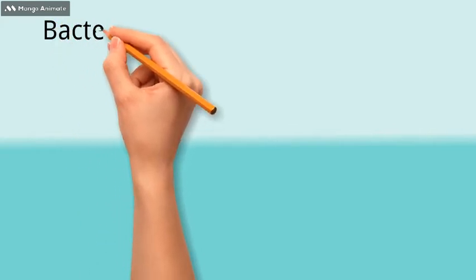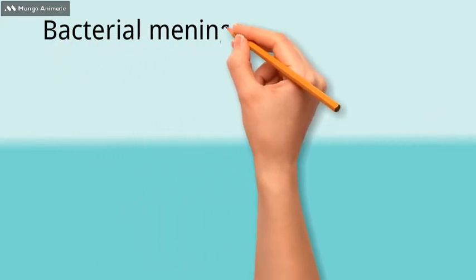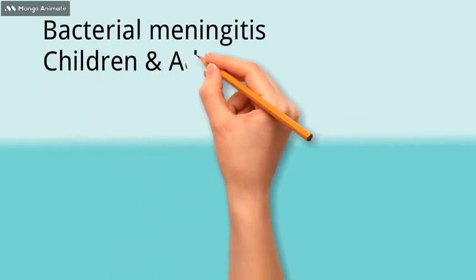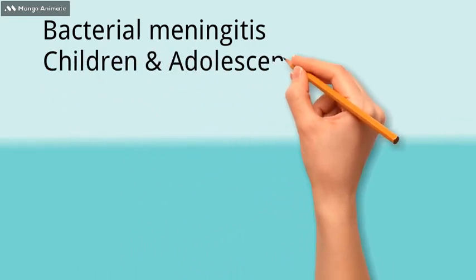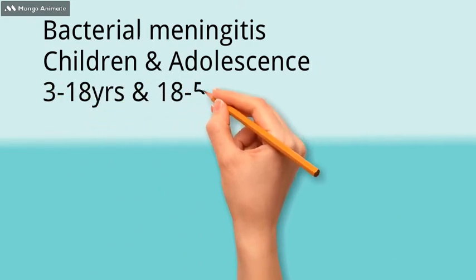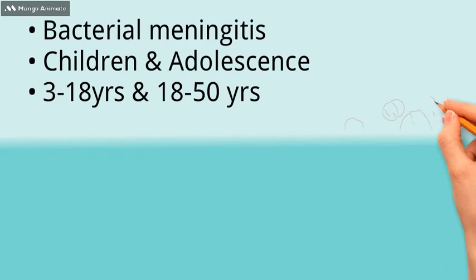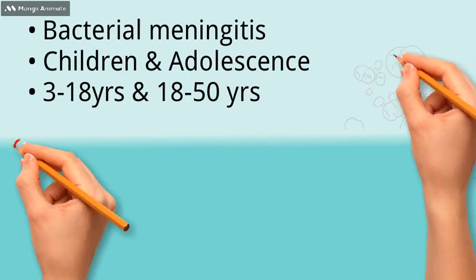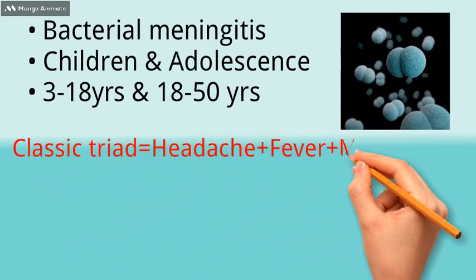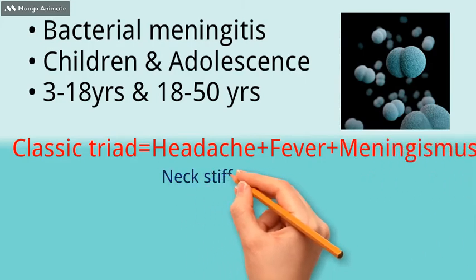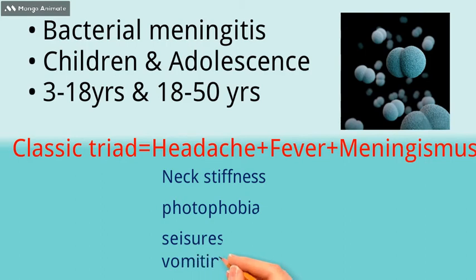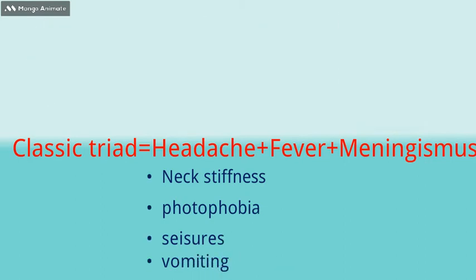Neisseria meningitidis causes bacterial meningitis commonly in children and adolescents, that is the age group between 3 to 18 years and 18 to 50 years. Meningitis causes the classic triad of symptoms including headache, fever, and meningismus. Neck stiffness, photophobia, seizures, and vomiting are also considered as symptoms of meningitis.